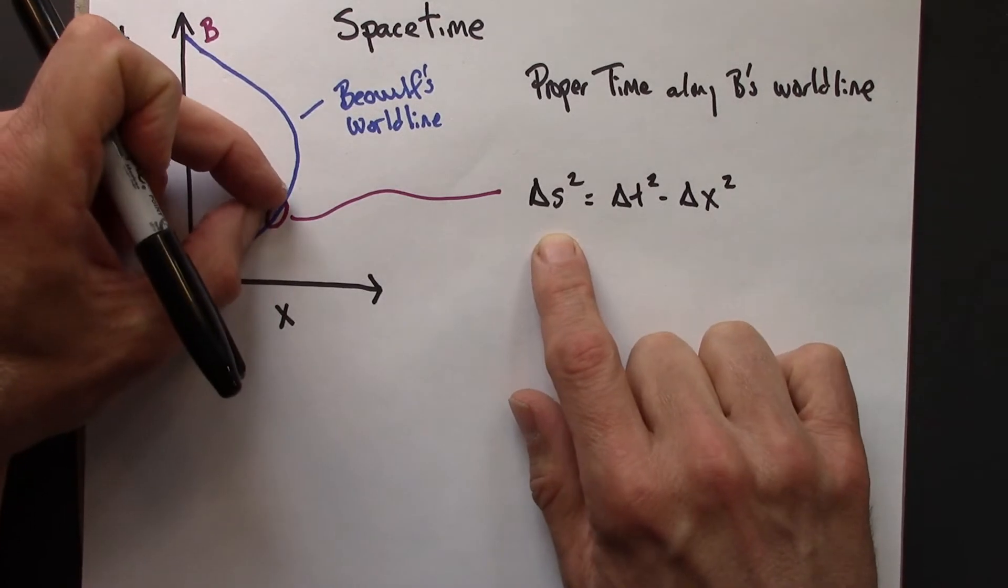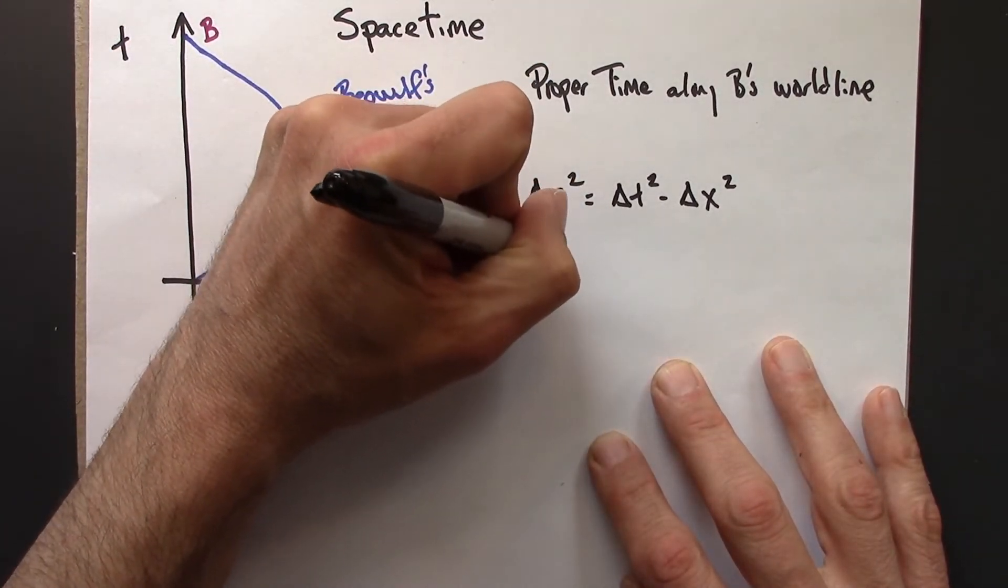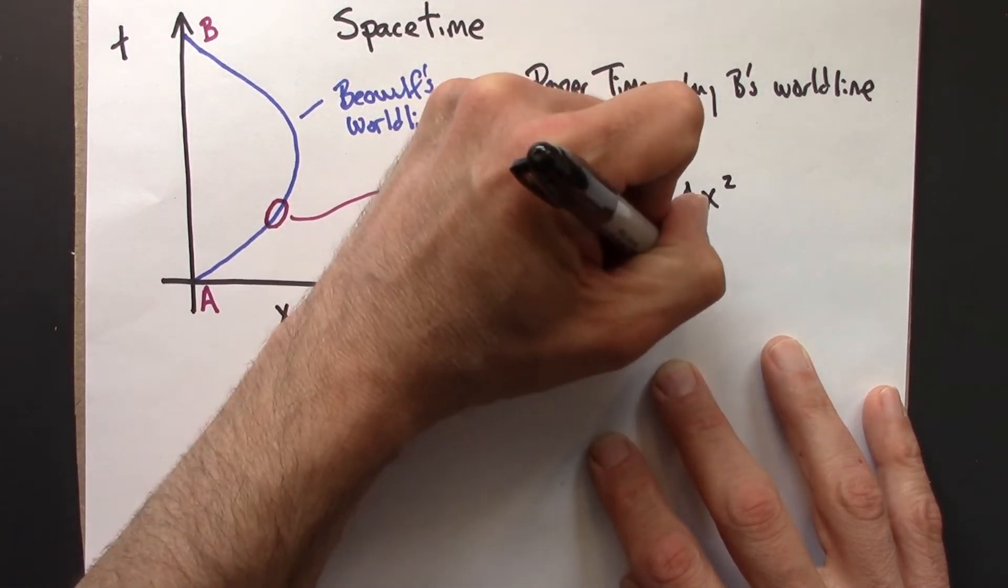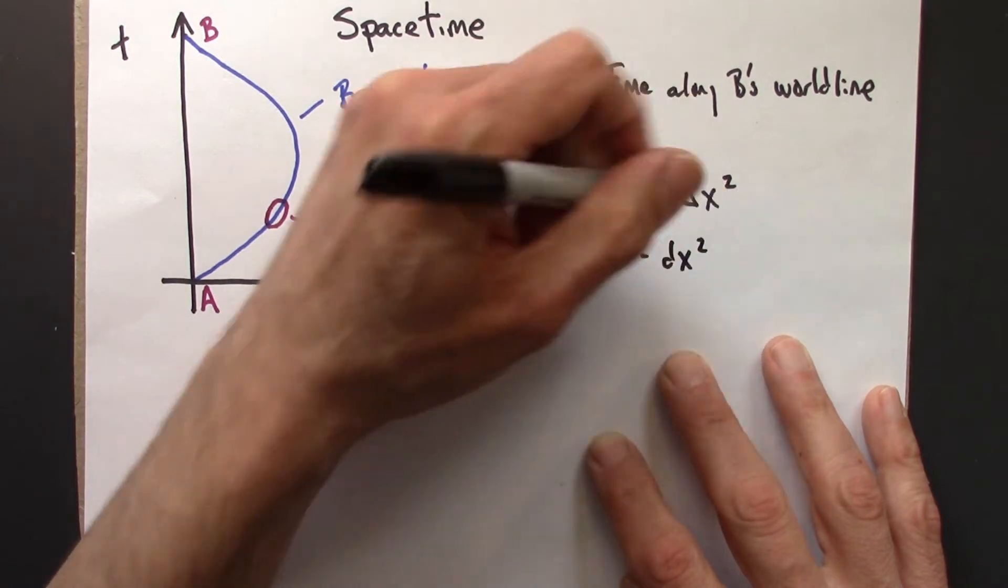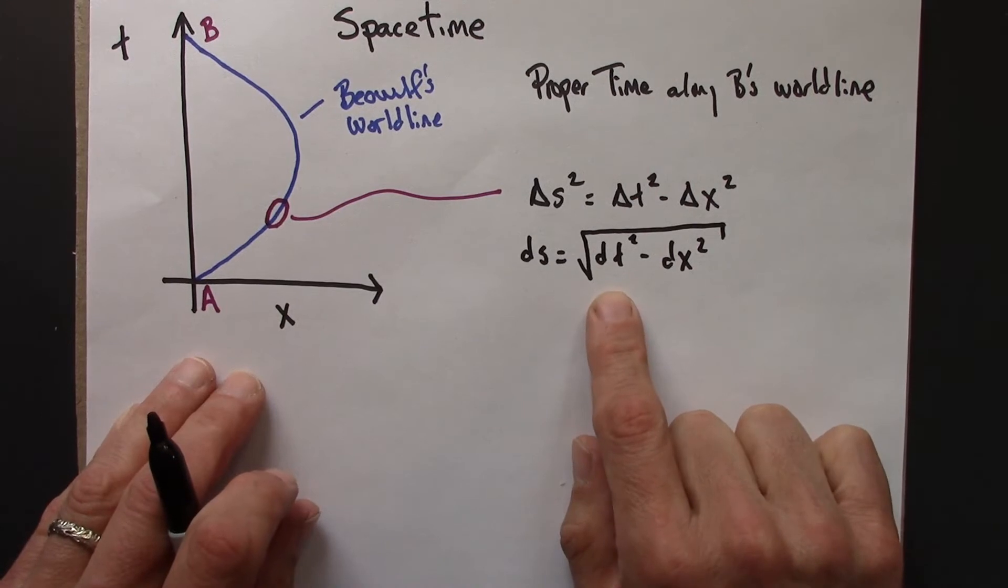Since this is a little interval, I'm going to use a little d, and then this is going to be this. So I just took the square root.